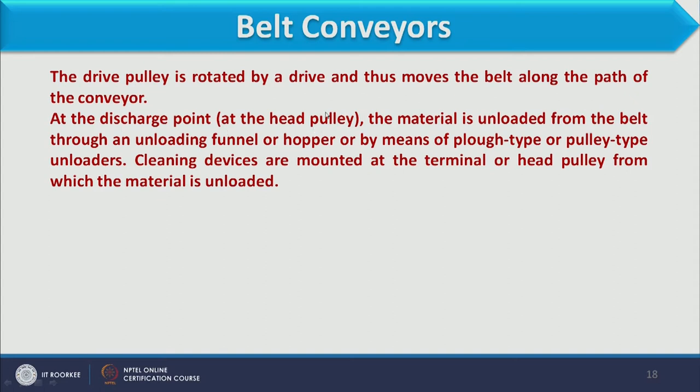At the discharge end, called the head pulley, material is unloaded through an unloading funnel or hopper, or by means of plow-type or pulley-type unloaders. Cleaning devices are mounted at the terminal or head pulley. After continuous operation, material deposits on the belt, so rotating brushes at the discharge end clean the belt, which works for both sticky and sandy materials.